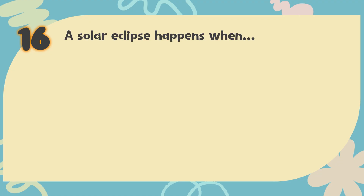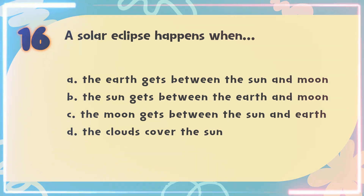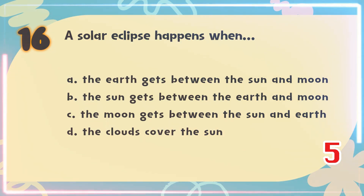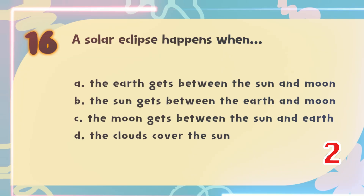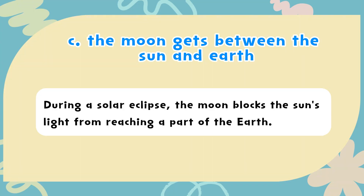Number 16: A solar eclipse happens when — A. The Earth gets between the Sun and Moon, B. The Sun gets between the Earth and Moon, C. The Moon gets between the Sun and Earth, D. The clouds cover the Sun. The correct answer is C. The Moon gets between the Sun and Earth. During a solar eclipse, the Moon blocks the Sun's light from reaching a part of the Earth.